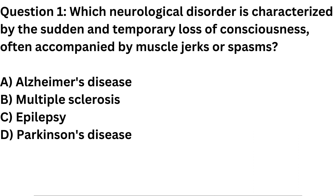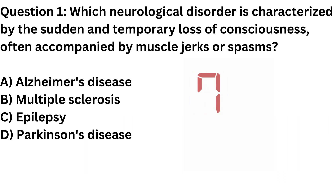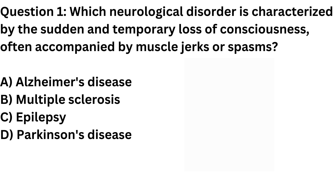Question 1. Which neurological disorder is characterized by the sudden and temporary loss of consciousness, often accompanied by muscle jerks or spasms? a. Alzheimer's disease. b. Multiple sclerosis. c. Epilepsy. d. Parkinson's disease. Correct answer: c. Epilepsy.